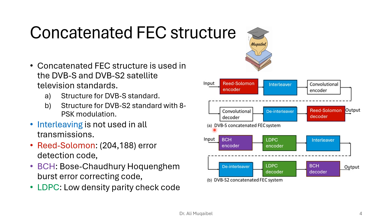Even though those codes are excellent, we can still get better performance by concatenating them — using multiple codes at the same time. The diagram shown here is Digital Video Broadcasting. In the first satellite system, we have concatenated forward error control systems, and the second version is also shown.